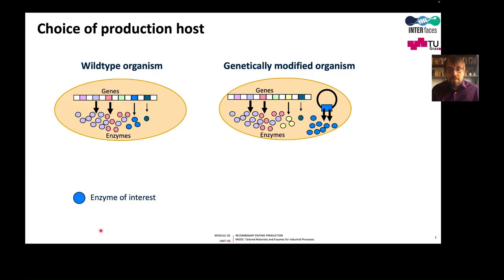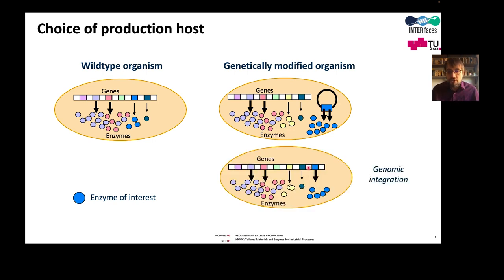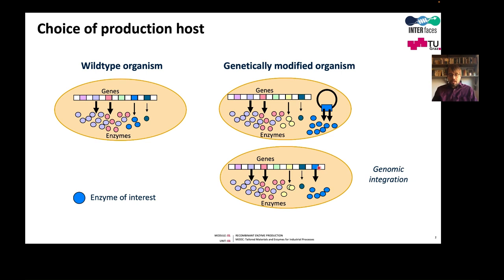In the last video, I explained the difference between enzyme production in the wild-type organism, which is a natural producer, and in a genetically modified organism, in which our gene of interest, here in blue, is inserted either in a circular DNA molecule, a plasmid, or inserted into the genome. Because we need to cut and close DNA in order to insert the gene, this cutting and closing of DNA is referred to as recombination, and therefore such a host would be a recombinant host.